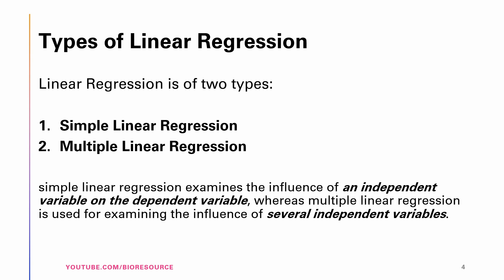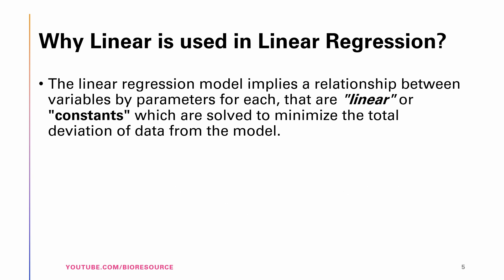What are the different types of linear regression? Linear regression is of two types: simple linear regression and multiple linear regression. Simple linear regression examines the influence of one independent variable on a dependent variable, whereas multiple linear regression is used to examine the influence of several independent variables.